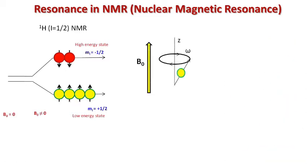If we consider the picture in terms of classical mechanics, the situation is somewhat like this: the spinning nucleus in the low energy state is precessing about the z-axis, which is the direction of the applied external magnetic field B0. While precessing, this nucleus is exposed to radio frequency radiation of energy ΔE. B0 is the static magnetic field working along the z-axis.